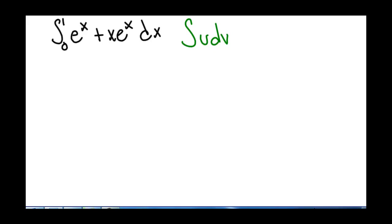But we can write this as a product. We can write this as the integral from 0 to 1 of e to the x times the quantity 1 plus x dx.